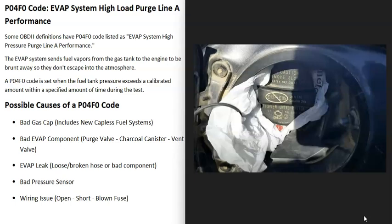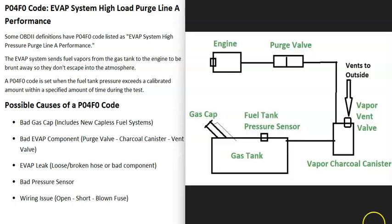I've made full videos on testing all the EVAP components, and I'll put a link in the description. The next possible cause is a bad EVAP component — like a bad purge valve, an issue with the charcoal canister, or a bad vent valve. Usually when that happens, you'll also get another code.